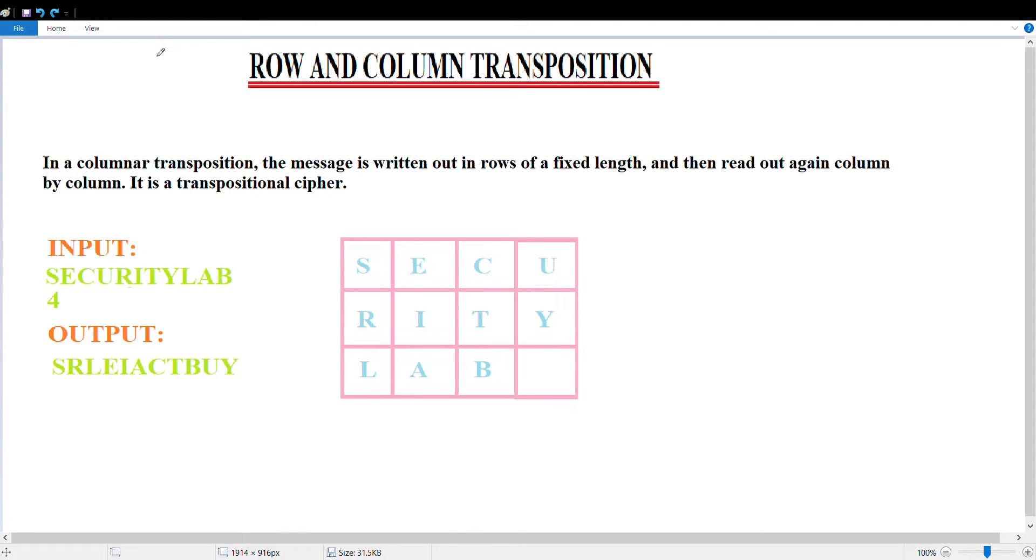Hey guys, we are from the team Happy Learnaholic, and today we're going to see the row and column transposition cipher. In a columnar transposition cipher, the message is written out in rows of a fixed length and then read out in columns. This is a transpositional cipher.